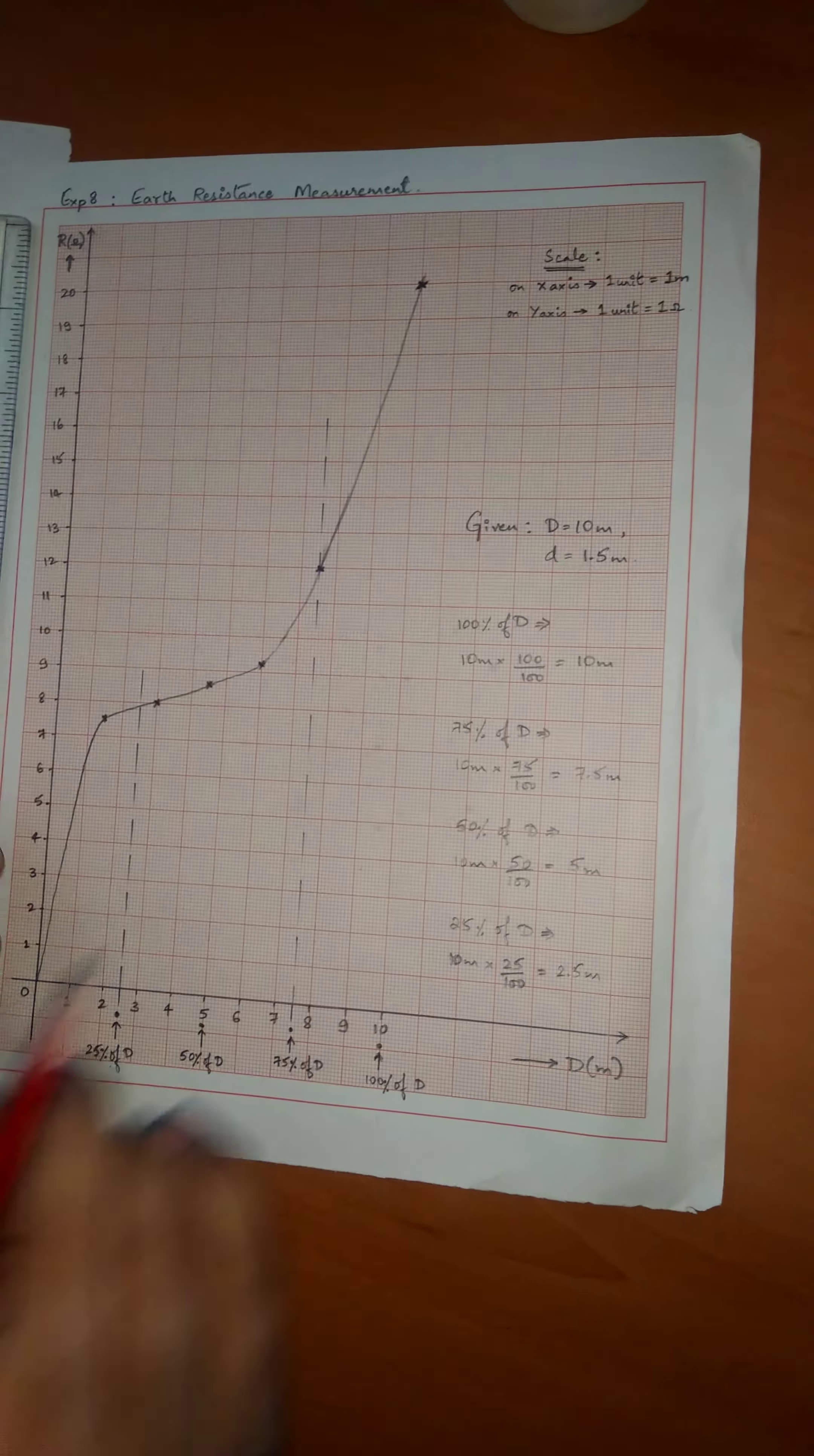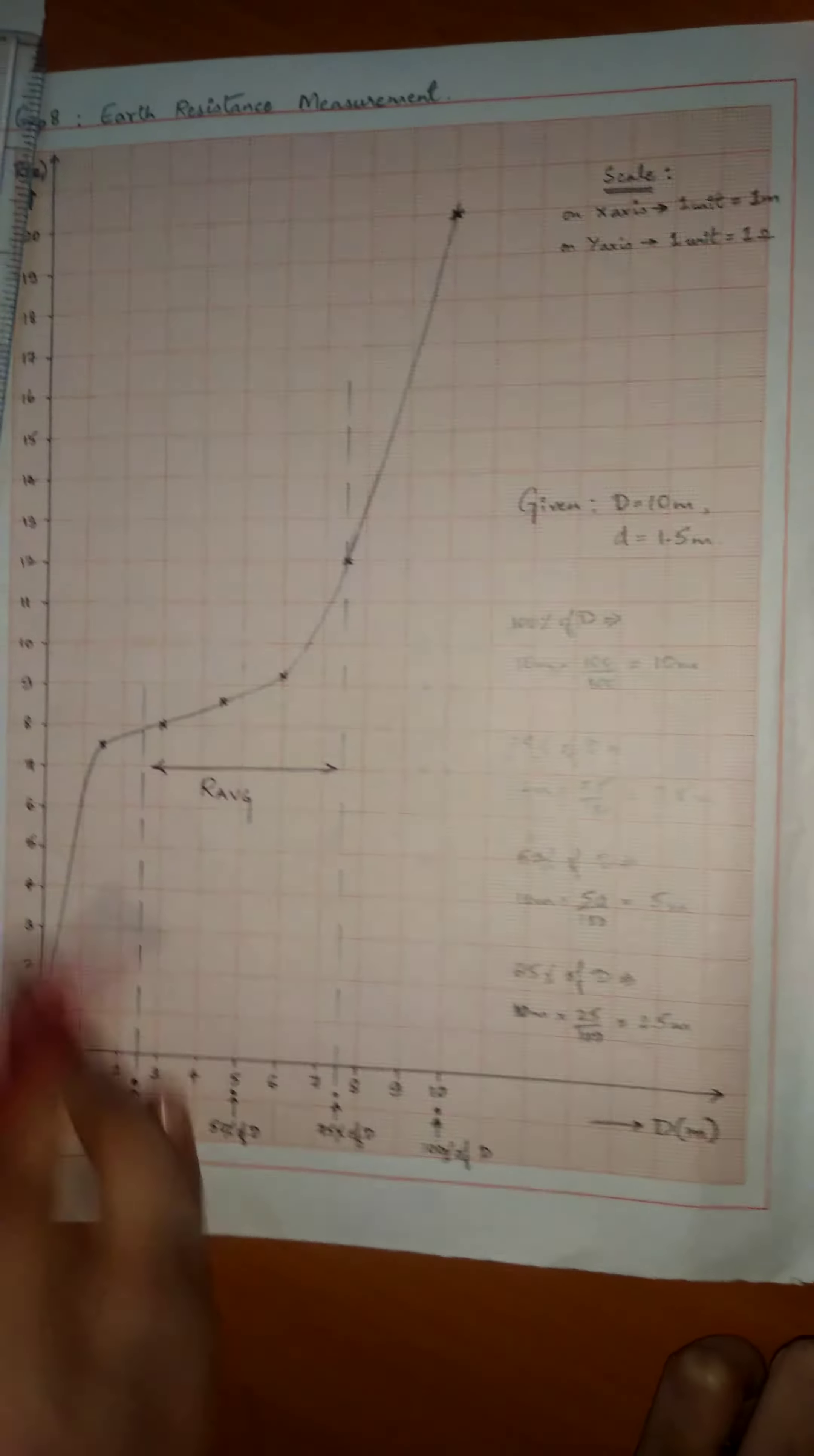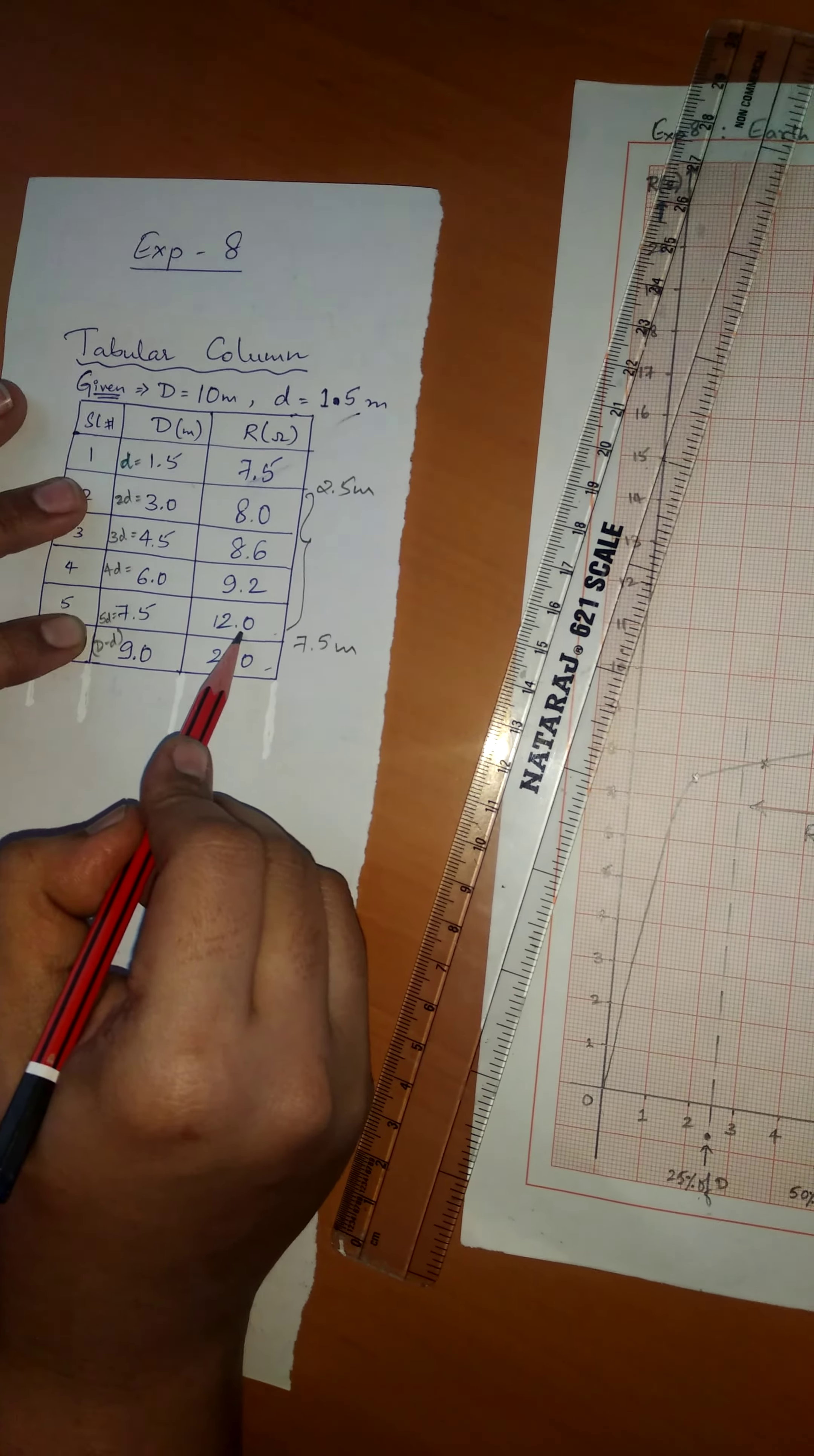To calculate our average, we have to consider the points that fall in between these regions. If you look at the tabulation column, we have the points between 25%, that is 2.5 meters, and 7.5 meters. These are the points that fall in between this region.